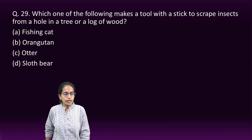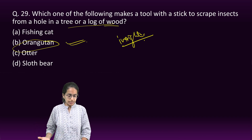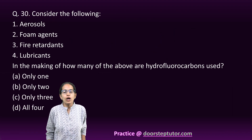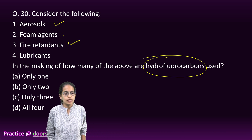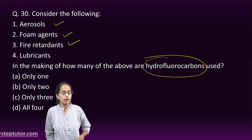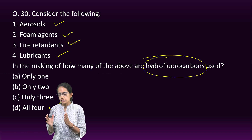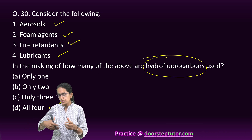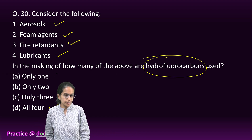Interestingly, orangutans select sticks of just the right size — neither too big nor too small. Moving on, hydrofluorocarbons are used as aerosols, fire retardants, foam-blowing agents, and lubricants. They are also used as propellants in the aerosol industry to push the aerosol out of the can. So all four options given are correct.